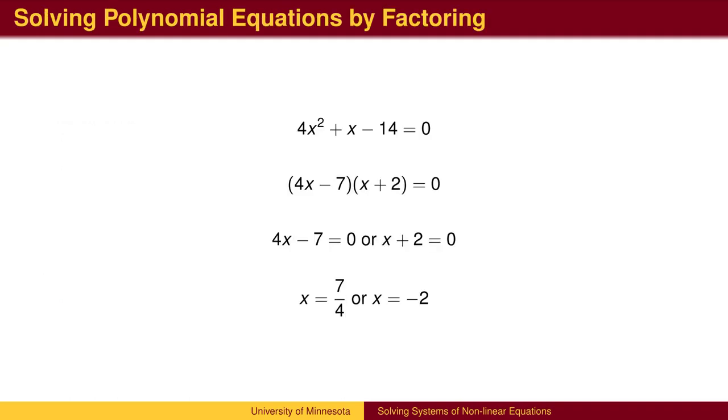Let's review the methods of solving polynomial equations. The first method is factoring. The key to this method is that the factors multiply to zero only when one of the factors is zero. We need to have the right-hand side of the equation equal to zero. We then factor the polynomial.